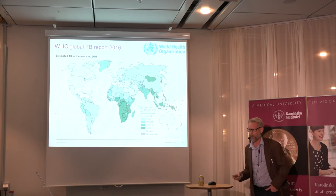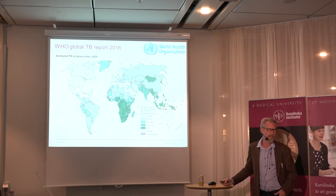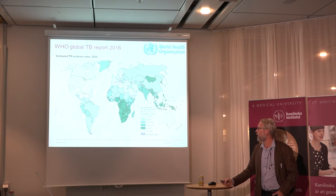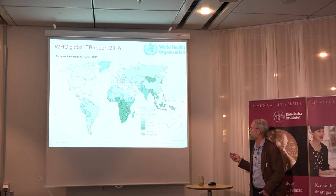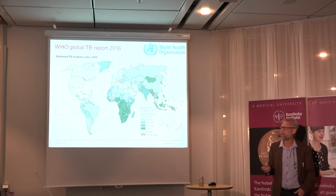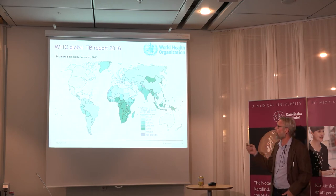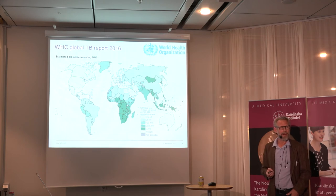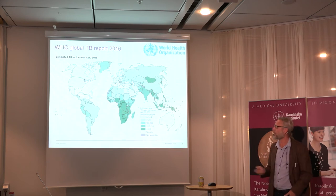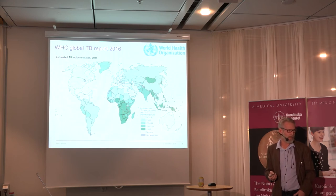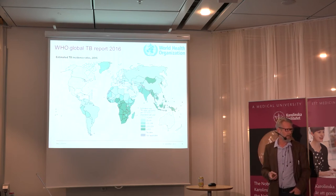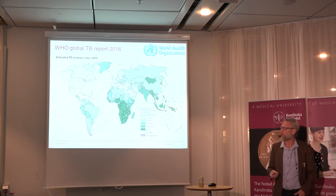This map shows the differences in TB incidence in different parts of the world — the darker shade of green means higher incidence. You can see it's Africa south of the Sahara and large parts of Asia that have high incidence. This is mainly correlated with national wealth: poor countries have very high rates and rich countries tend to have very low rates. There is one additional major driver in southern Africa — the HIV epidemic, which breaks down your immune system and makes you susceptible to developing TB when infected.